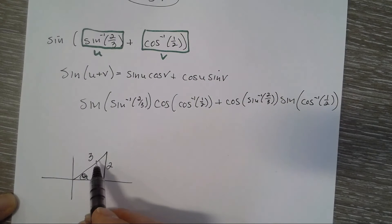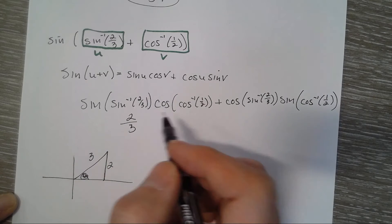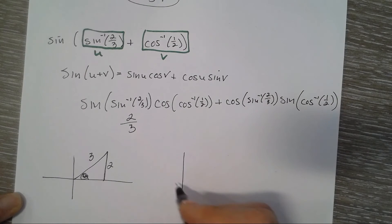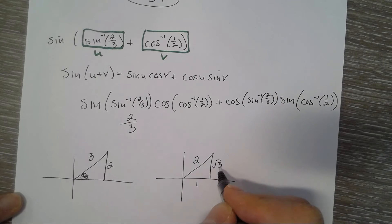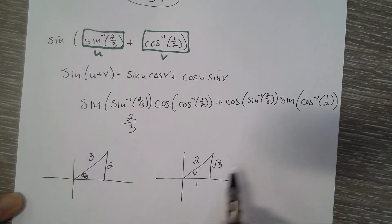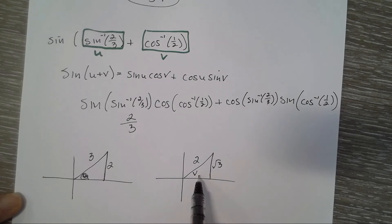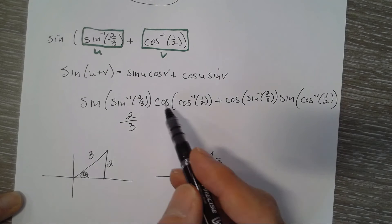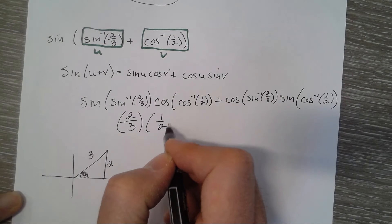The sine of inverse sine of two-thirds is just two-thirds. For cosine of inverse cosine of one-half: what angle has a cosine of one-half? This is actually a special right triangle — the angle v is 60 degrees or pi over three. We draw the triangle and the cosine of that angle is one-half. So the first term gives us two-thirds times one-half.